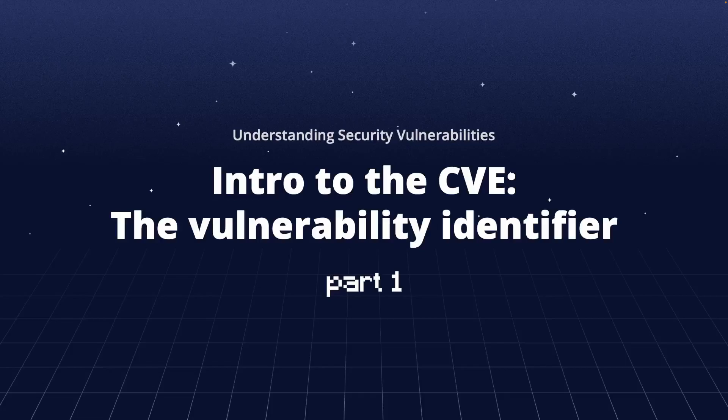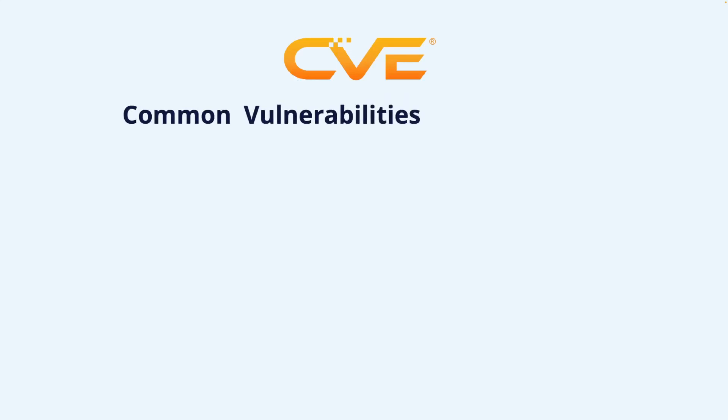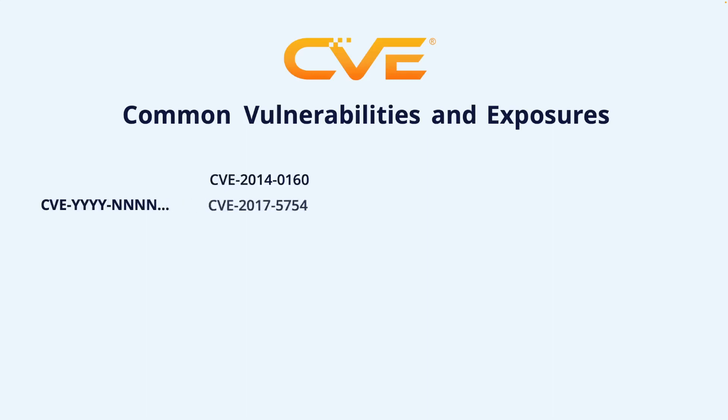In this first part of the course, we will look at the CVE identifier and discuss what it is and what it is used for. The industry standard for identifying a vulnerability is the CVE identifier, short for Common Vulnerabilities and Exposures. The identifier is the letters CVE followed by the year it was reported and then followed by a number with at least four digits. Giving a vulnerability a unique identifier allows the vulnerability information to be communicated and discussed such that everyone involved knows precisely which vulnerability is referred to.